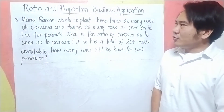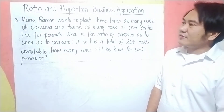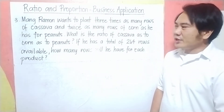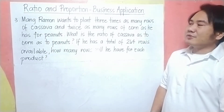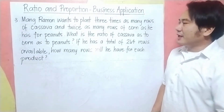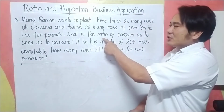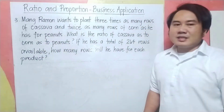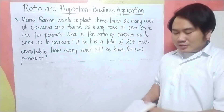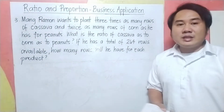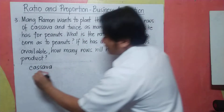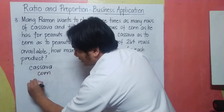Number three: Mong Ramon wants to plant 3 times as many rows of cassava and twice as many rows of corn as he has for peanuts. What is the ratio of cassava to corn to peanuts? And if he has a total of 264 rows available, how many rows will he have for each product? We are asked for the ratio of cassava, corn, and peanuts, and then the actual row count for each.